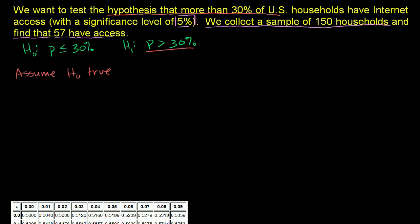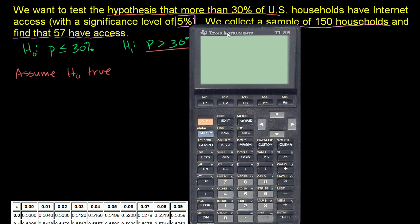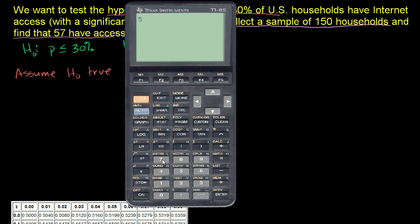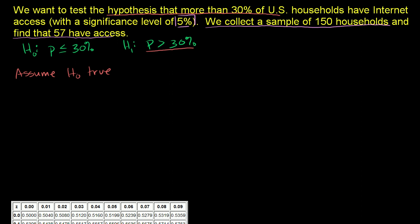Let's find out what our sample proportion even is. We had 57 households out of 150, so our sample proportion is 0.38. When we assume our null hypothesis to be true, we're going to assume a population proportion that maximizes the probability of getting this. The highest population proportion within our null hypothesis that maximizes this probability is right at 30%.